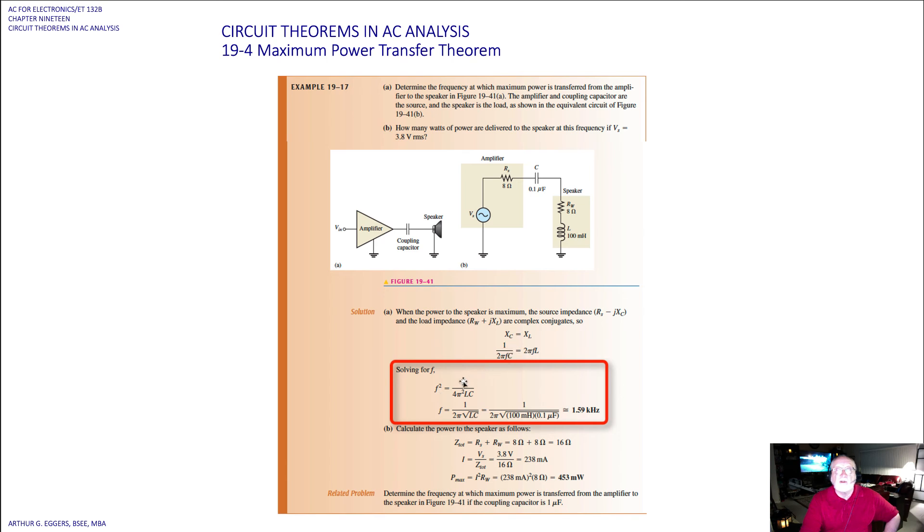The frequency then is 1 over 2π times the square root of LC. We've seen that before. We enter our values and get a frequency of 1.59 kHz at the point of resonance or maximum power transfer.